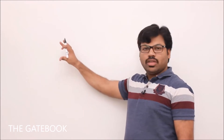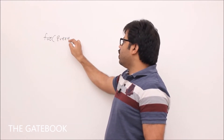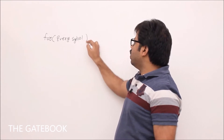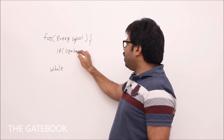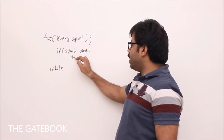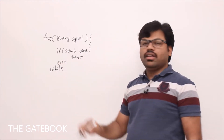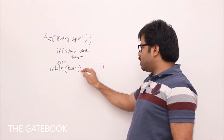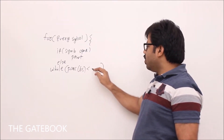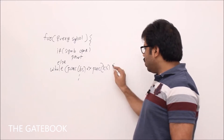We'll see the time complexity of infix to postfix conversion. First, the algorithm's idea: there is a for loop for every symbol. For every symbol, we have a while loop. If the symbol is an operand, we simply print it. If the symbol is an operator, we enter the while loop and compare the precedences of the top of the stack with the current symbol.